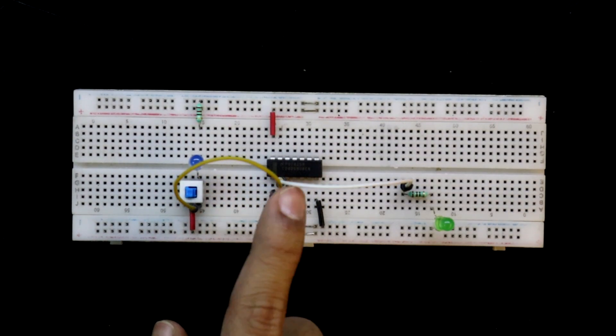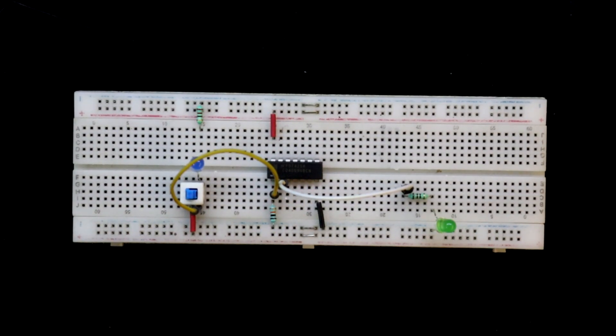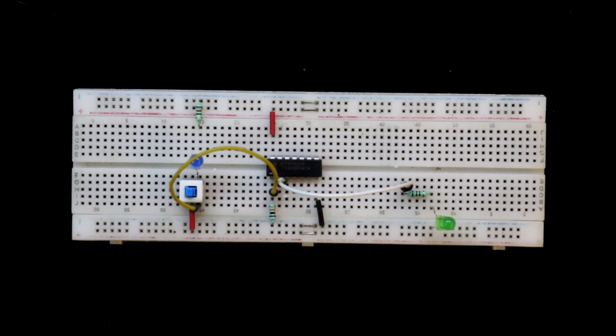So whenever we press this switch, it will get the input. And the output will be turned off. And if the input is 0, then we'll get the output. Now connecting both the positive and negative rails.